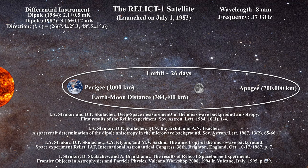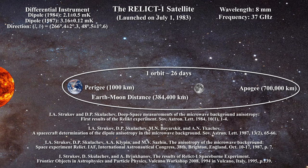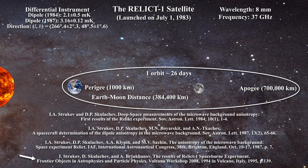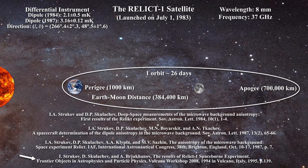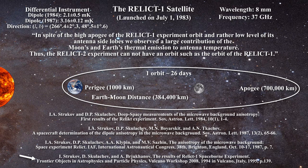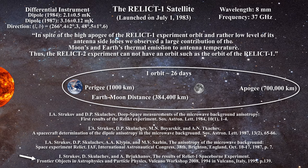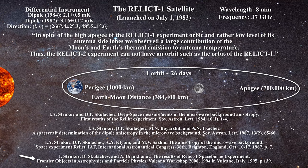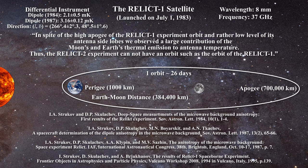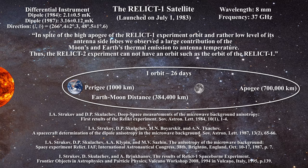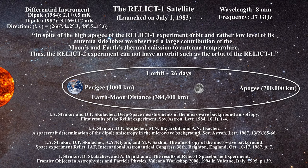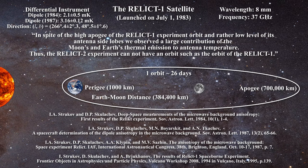The story with Relit continues, as there are several concerns. Ten years after the initial Relit-1 report, Strukov et al. would write a paper in order to justify the launch of Relit-2, to be a multi-frequency instrument with a very different orbit — launched to the second Lagrangian point. Relative to their previous results, they would write: in spite of the high apogee of the Relit-1 orbit and rather low level of its antenna side lobes, we observed a large contribution of the Moon's and the Earth's thermal emission to antenna temperature. Thus, the Relit-2 experiment cannot have an orbit such as the orbit of Relit-1. In justifying Relit-2, they report much higher signal for the Galaxy with Relit-1 than previously observed within the confines of the Earth. This implies that the real dipole signal at L2 is much lower than expected by the WMAP and Planck teams based on COBE data.